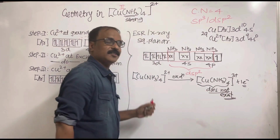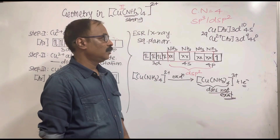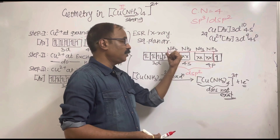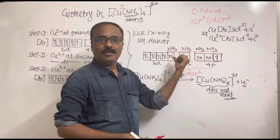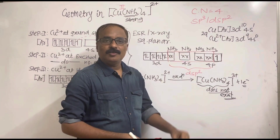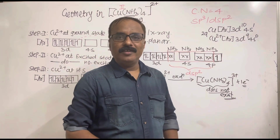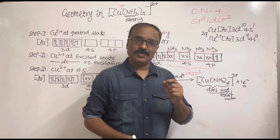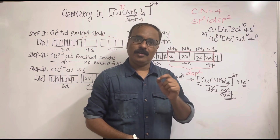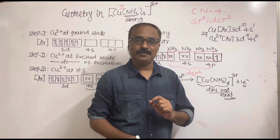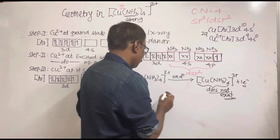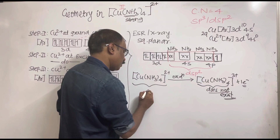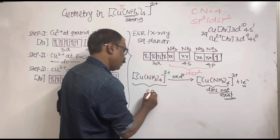So this electron will remain in its atomic orbital only. Therefore, Huggins suggested a different structure and a different hybridization. Huggins suggested that the hybridization of this complex is sp²d.